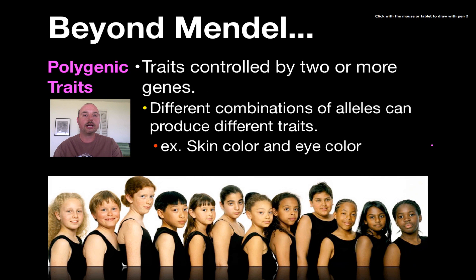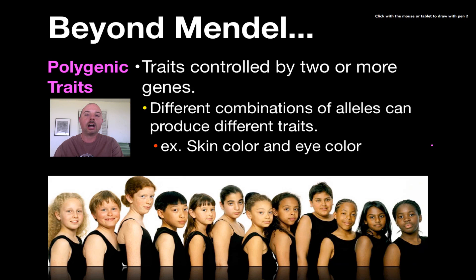The last of the five concepts is polygenic traits — a trait controlled by two or more genes. Eye color and skin color are way more complicated than simple Mendelian dominance. It's not just brown dominant over blue, although that is the case to some degree. Eye color and skin color are examples of polygenic traits where a combination of alleles gives us a whole spectrum of different colors and tones.